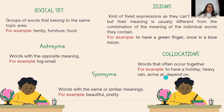Also, we have antonyms, which are words with the opposite meaning. For example, big and small. Synonyms are words with the same or similar meanings. For example, beautiful and pretty.